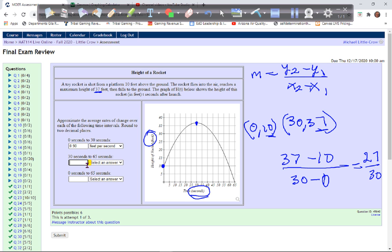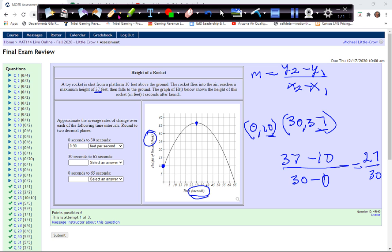30 seconds to 65 seconds. So we go from this point, so we use this point again, 30 comma 37, and this is going to be 65 comma 0, that's the y value. Using slope, 37 minus 0 on the top, 30 minus 65 on the bottom. And you can reverse these if you want, we'll get a negative. Notice it's got negative slope, so it should be negative. We get 37 on top and negative 35 on the bottom.